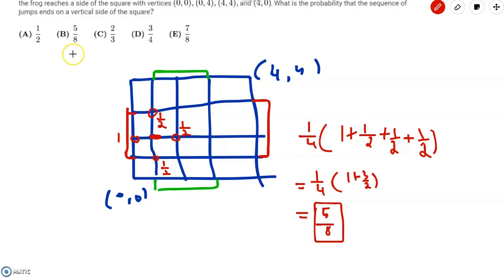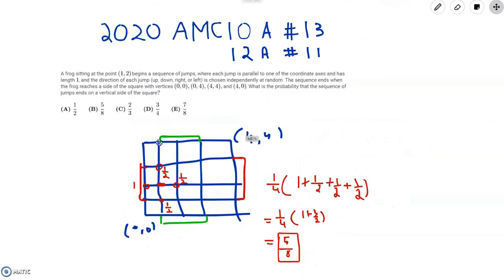Going to our answer choices, we see that five eighths corresponds to answer choice B. So we mark that, and we're done.